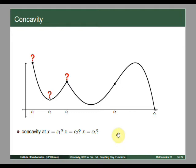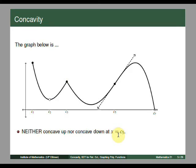We cannot define concavity at these three points. This is because x equals c1 is an endpoint and there is no open interval there. At c2, the function is undefined, hence not differentiable. And at c3, the function is again not differentiable because it is a corner. Moving on, at the point c5, it is neither concave up nor concave down. This is because in the open interval containing c5, on the left, points on the graph are above the tangent line, while points on the right are below the tangent line. Hence, neither concave up nor concave down.